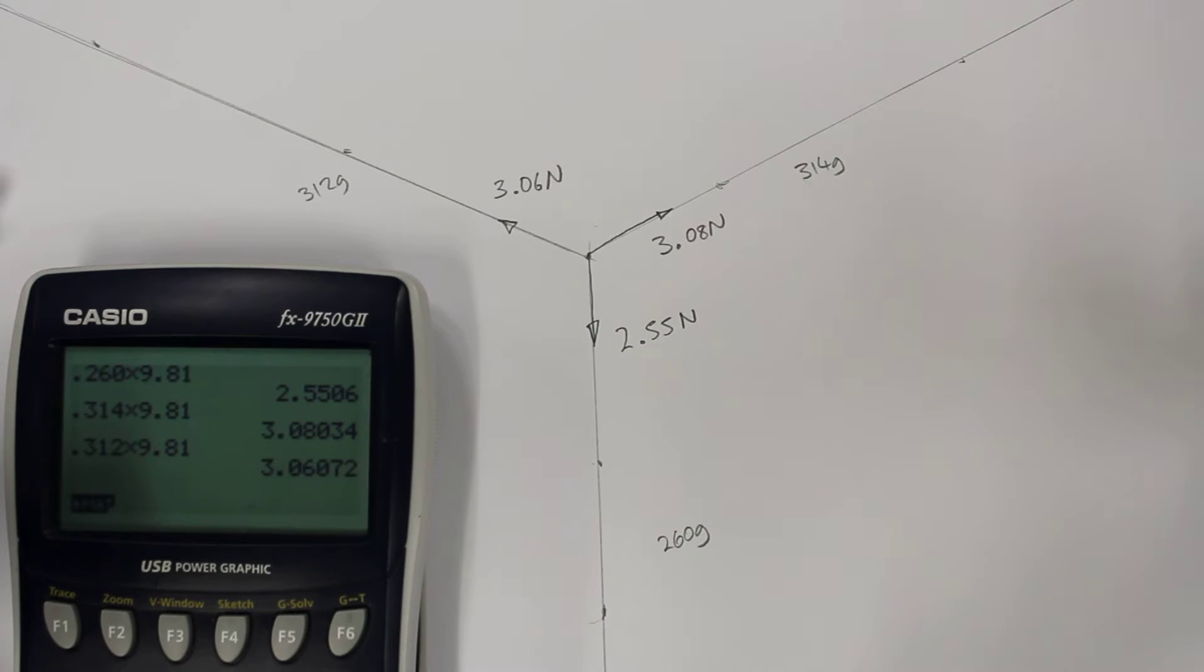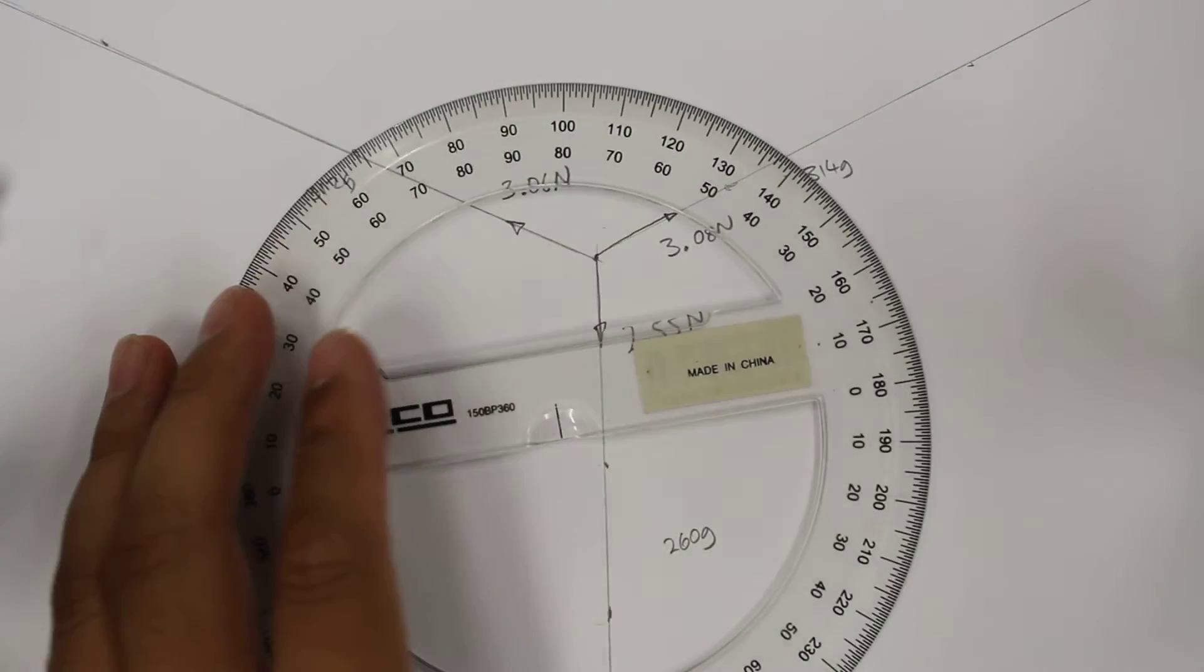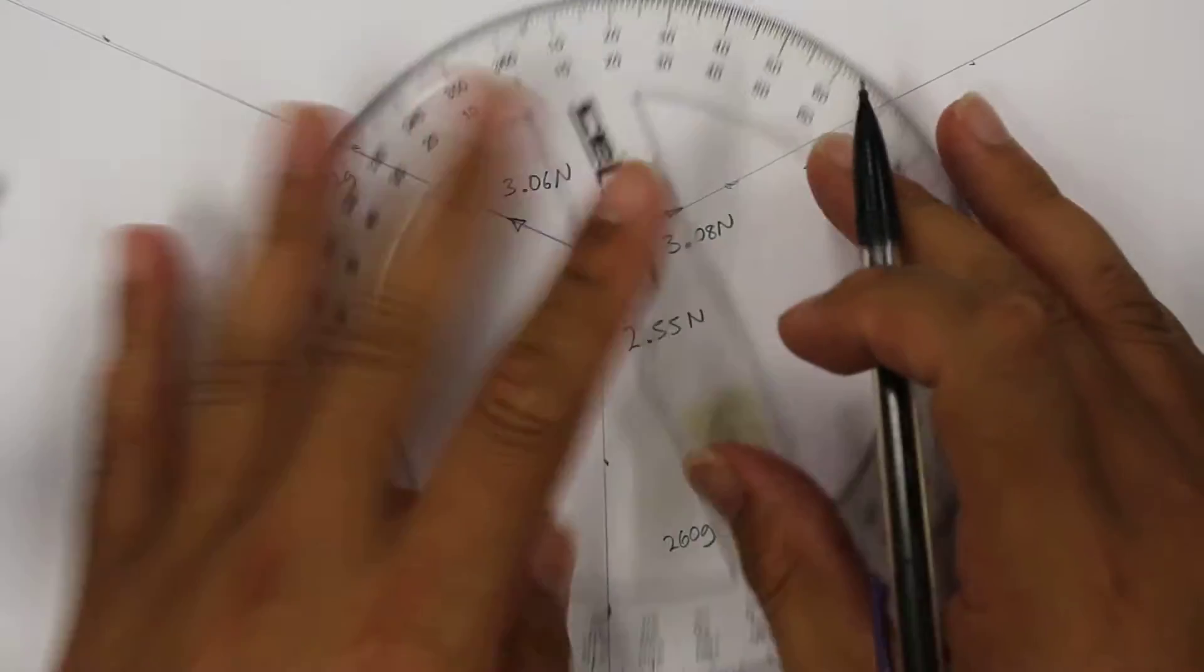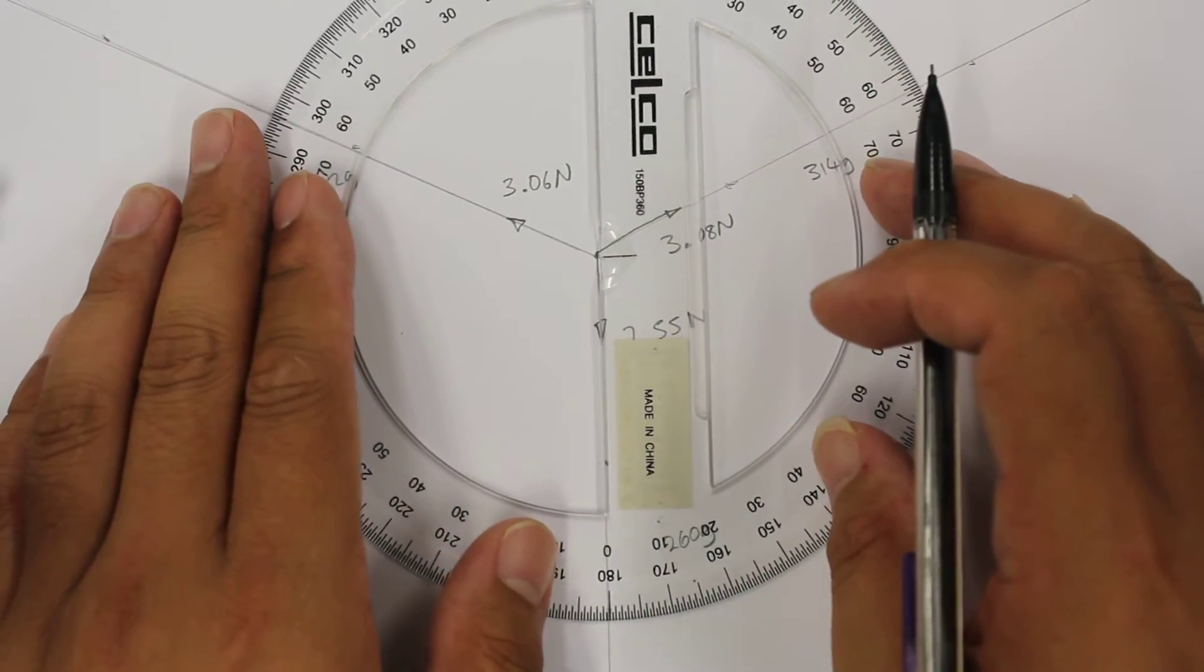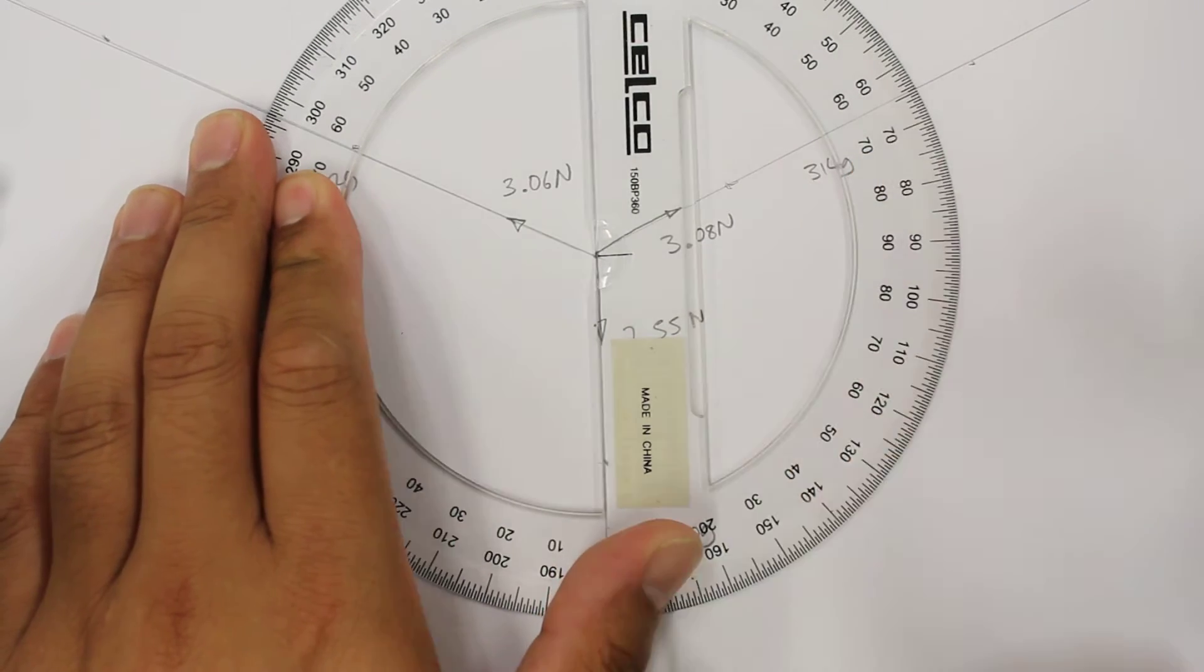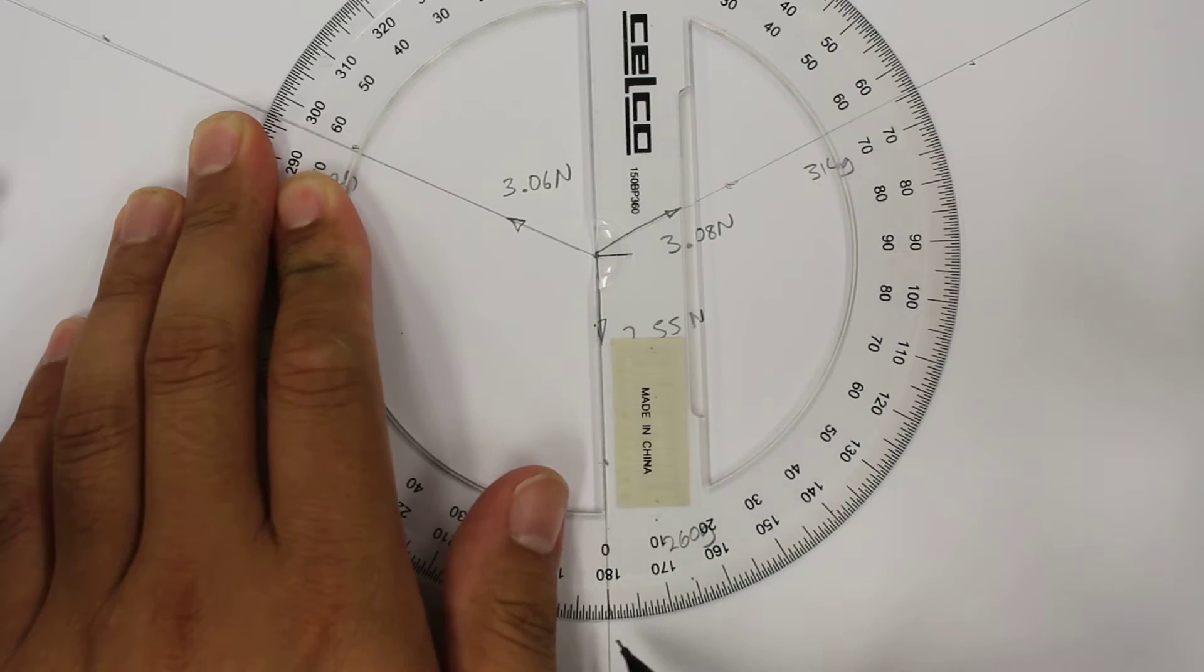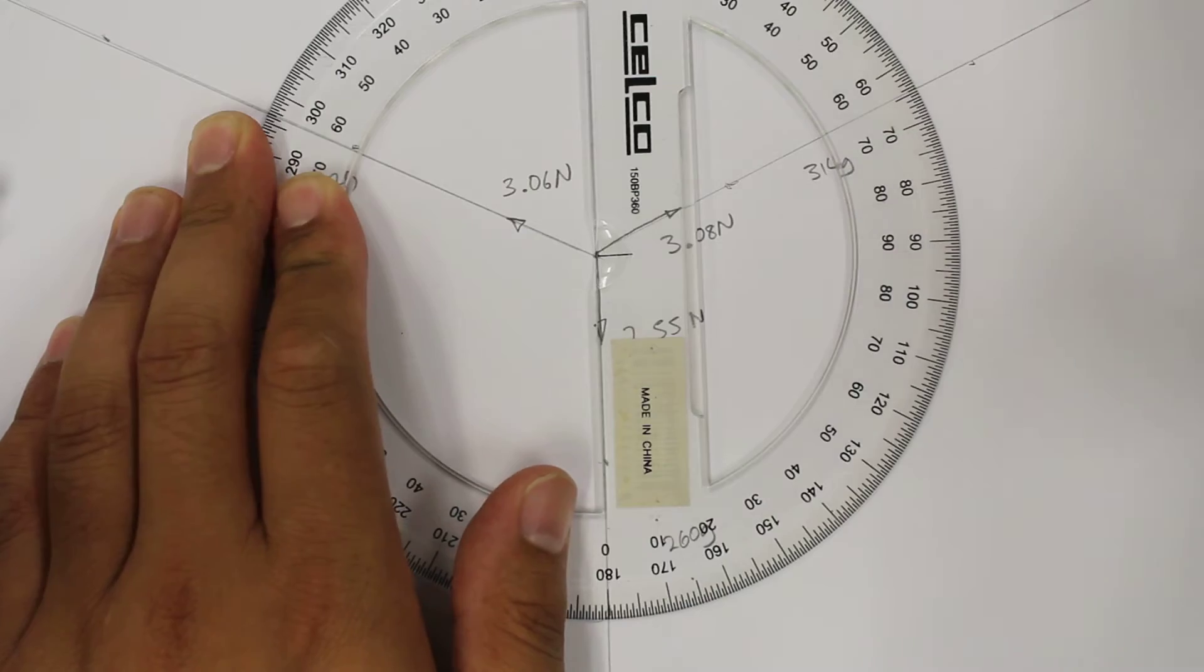Okay, so to draw the polygon of forces, we do need some angles here. So I have a protractor, and what we'll do is measure the angle from the downwards vector for each one of these sections. So we'll just line up our protractor.